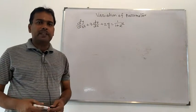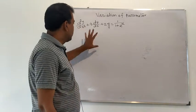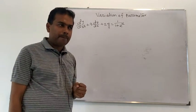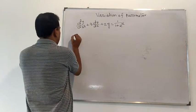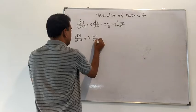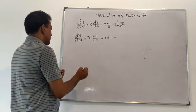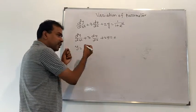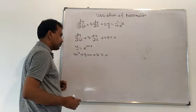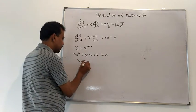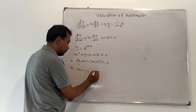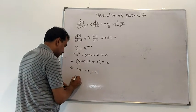We know how to find the complementary function of this differential equation. First, we solve the corresponding homogeneous differential equation set equal to zero: d²y/dx² + 3 dy/dx + 2y = 0. If y = e^(mx) is a trial solution, then the auxiliary equation is m² + 3m + 2 = 0, that is (m+2)(m+1) = 0, giving m = −1 or m = −2.